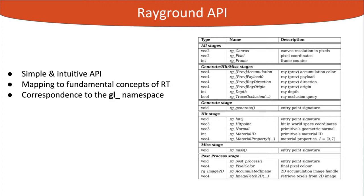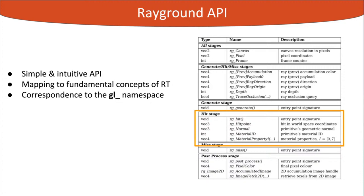We wanted students to feel right at home by mapping fundamental concepts of ray tracing to a GL-like API. Rays are submitted for intersection by assigning to the built-ins rgRayDirection and rgRayOrigin. During the hit stage, the user is given access to built-in variables holding the normal, position, material ID and other intersection-related values.